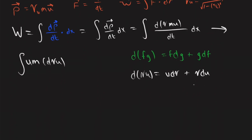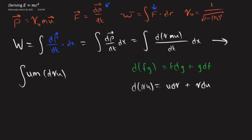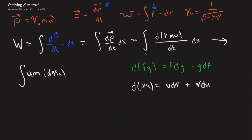We see that du is du — the derivative of velocity is the derivative of velocity. The derivative of the gamma function: gamma is only a function of u, the speed of light is constant. So we're going to have to take the derivative, and we're going to get a du out of it, which means we can then integrate with respect to du.